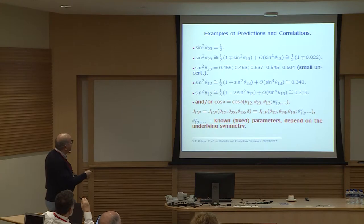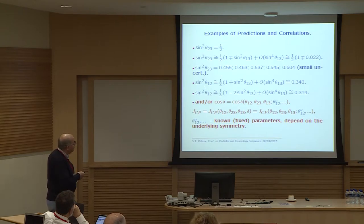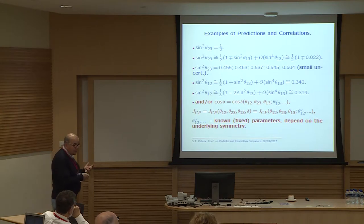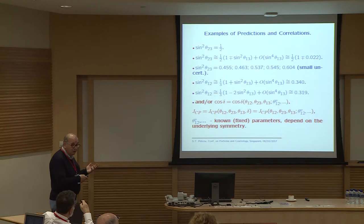For example, in one class of theories θ₂₃ is predicted to be π/4, or to deviate from π/4 by a quantity determined by θ₁₃. In other classes, sin²θ₂₃ can deviate significantly from 0.5. We have theories with a correlation between θ₁₂ and θ₁₃. And finally, in large classes of these theories, the Dirac CP-violating phase satisfies a sum rule by which it is expressed in terms of the three mixing angles and parameters characterizing the underlying symmetry of the PMNS matrix.